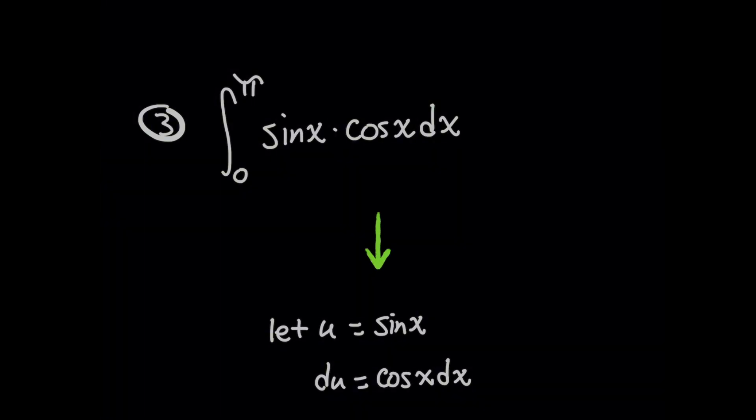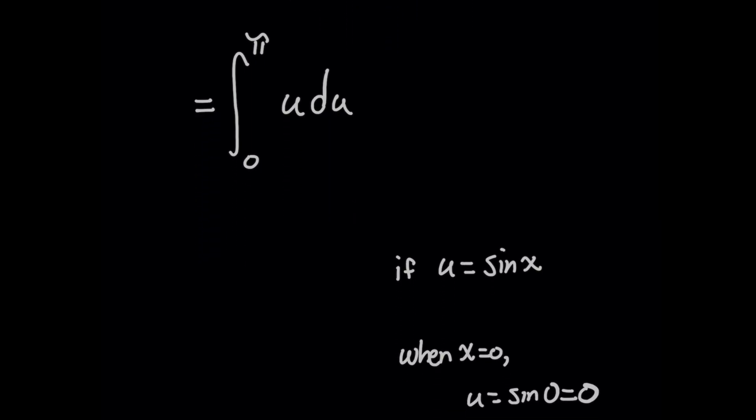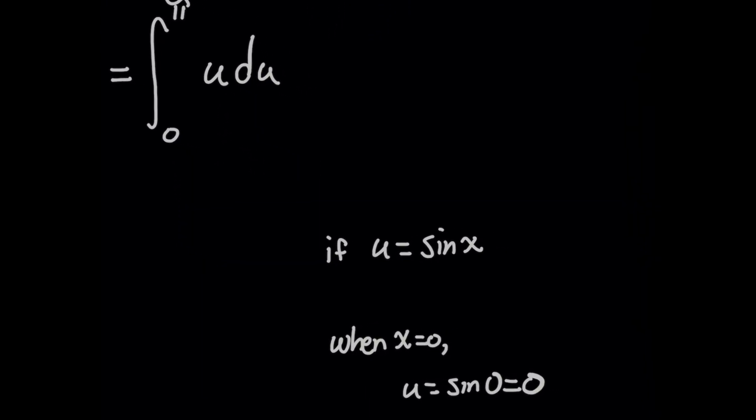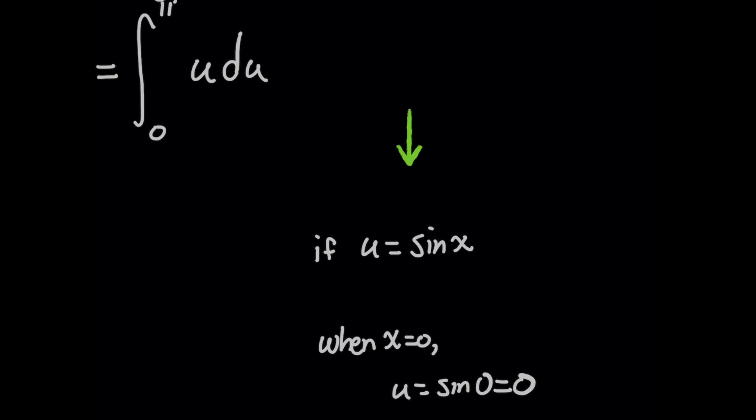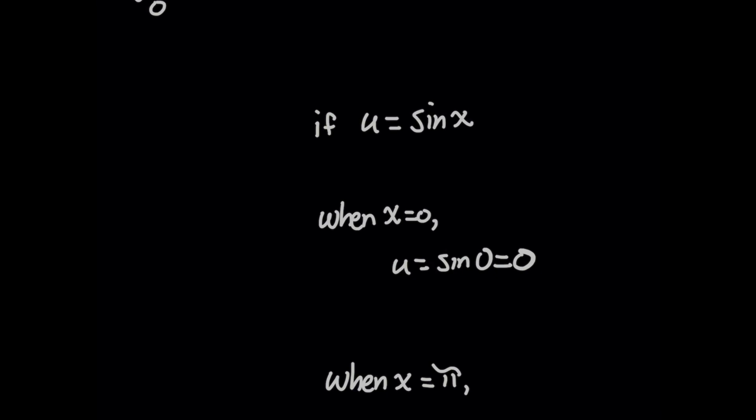So we are transforming from an x domain to a u domain. And the way we need to do this now is, since we're writing everything in terms of u, and u is sine of x, we've got to take this expression right here and recalculate what our lower and upper limits of integration are going to be. So I'm going to plug in the original lower limit of integration for x, which was 0. And this will give me a new lower limit of integration for u as sine of 0, which we know is 0.